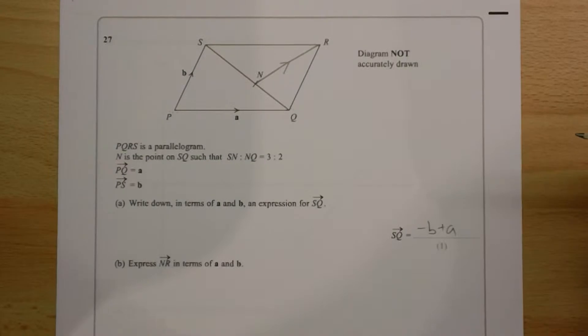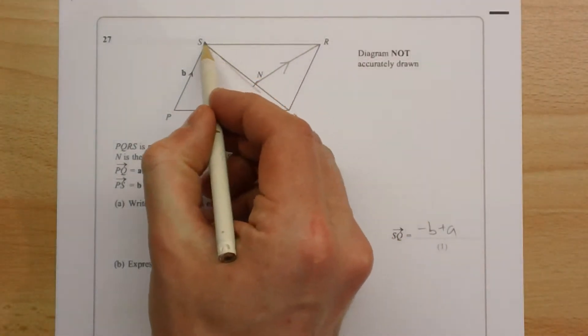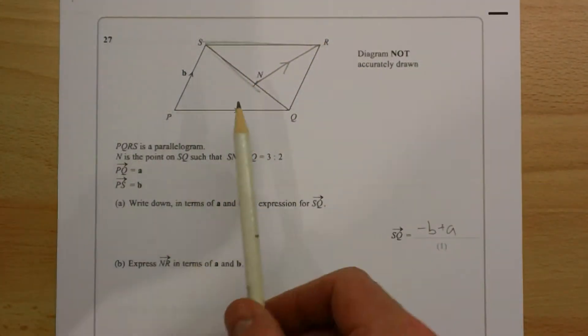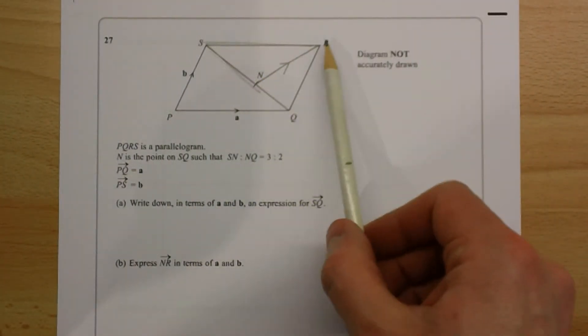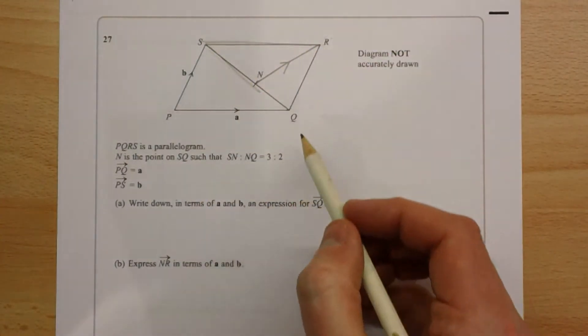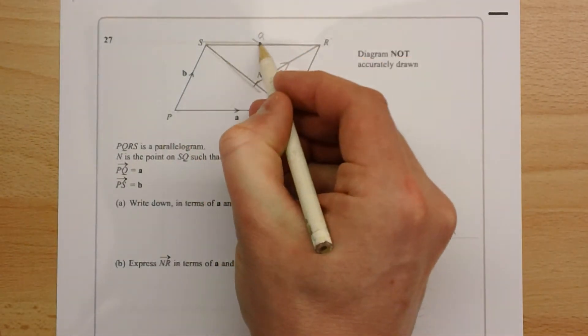Okay, using the vectors we know, this one here and this one here, if we add those two together, just like we did for part A, we can get the vector NR. Now, this one is easy, because this is a parallelogram, opposite sides are equal, so therefore this vector is A.